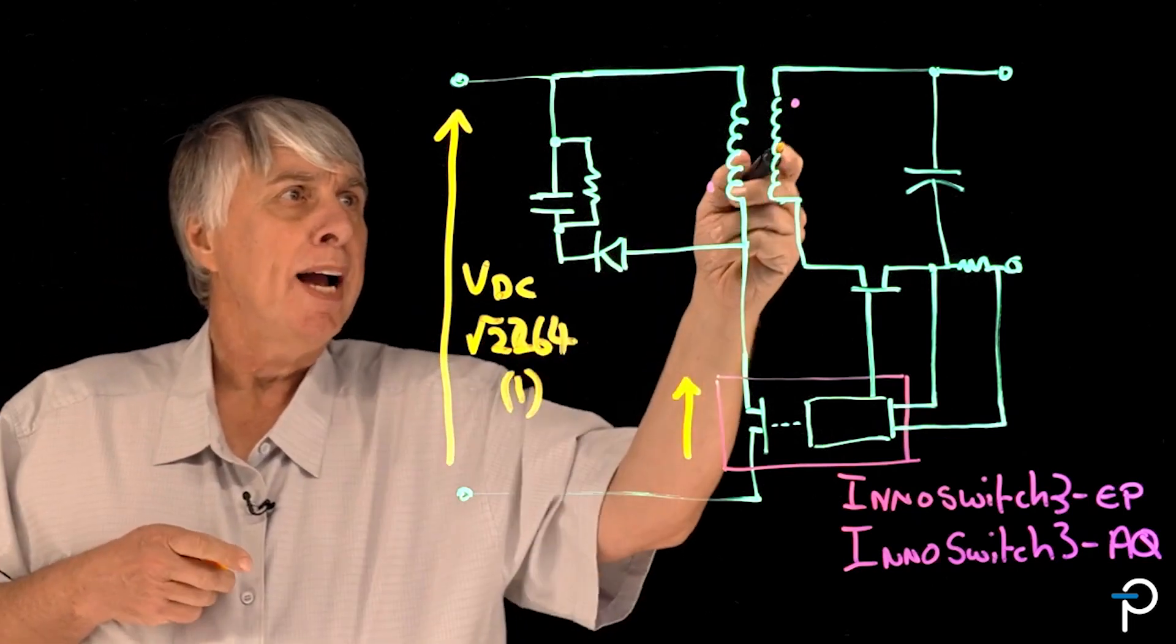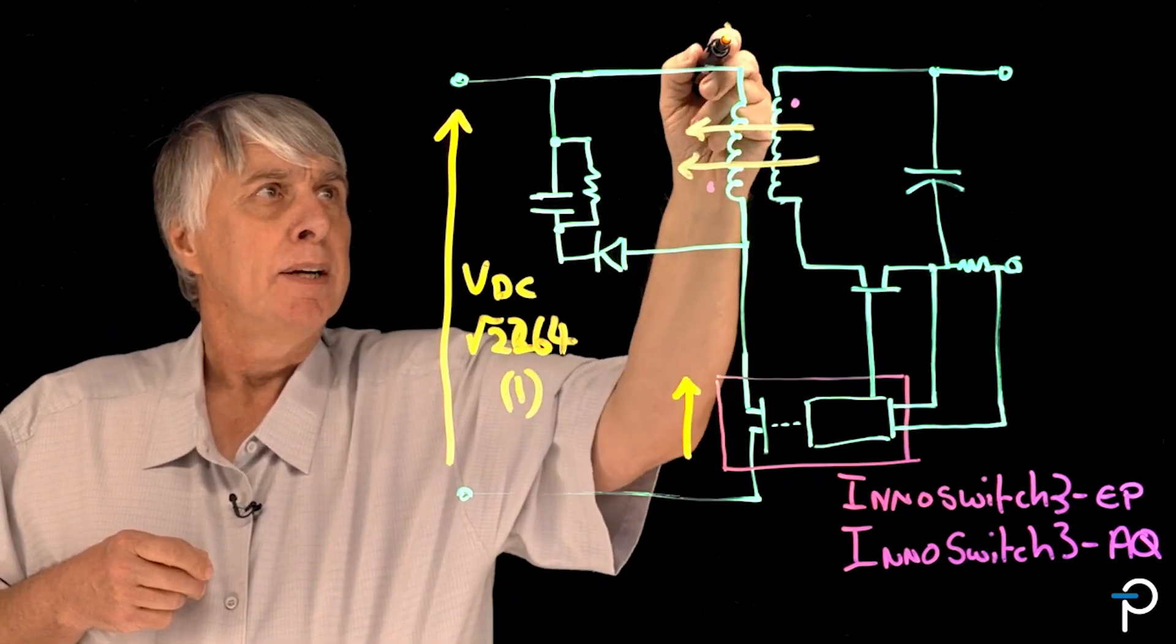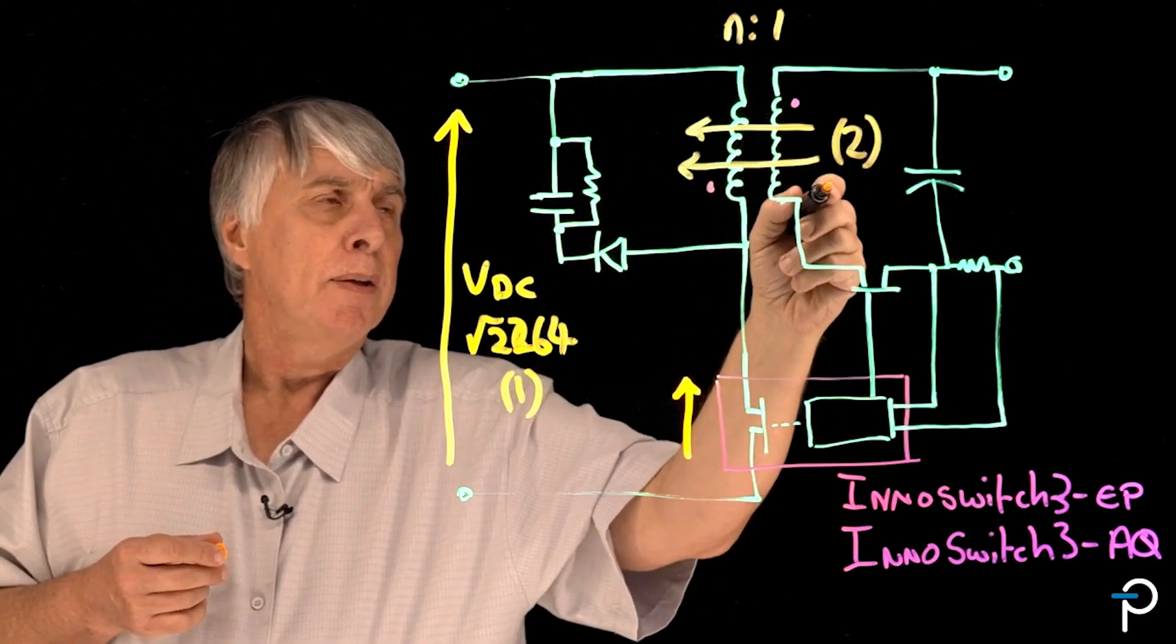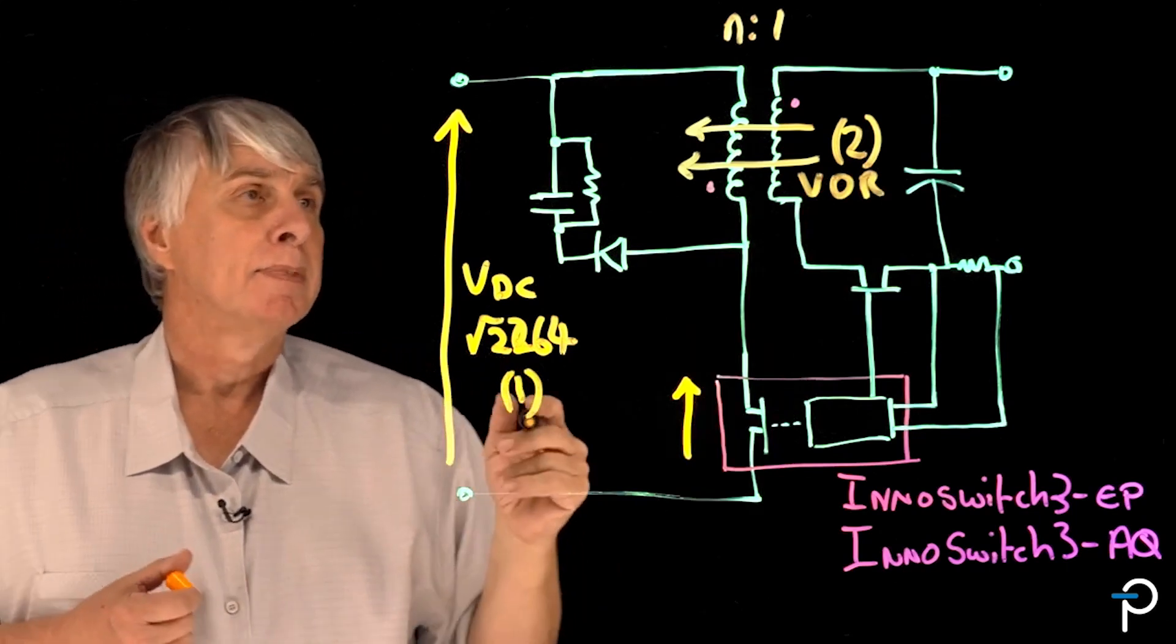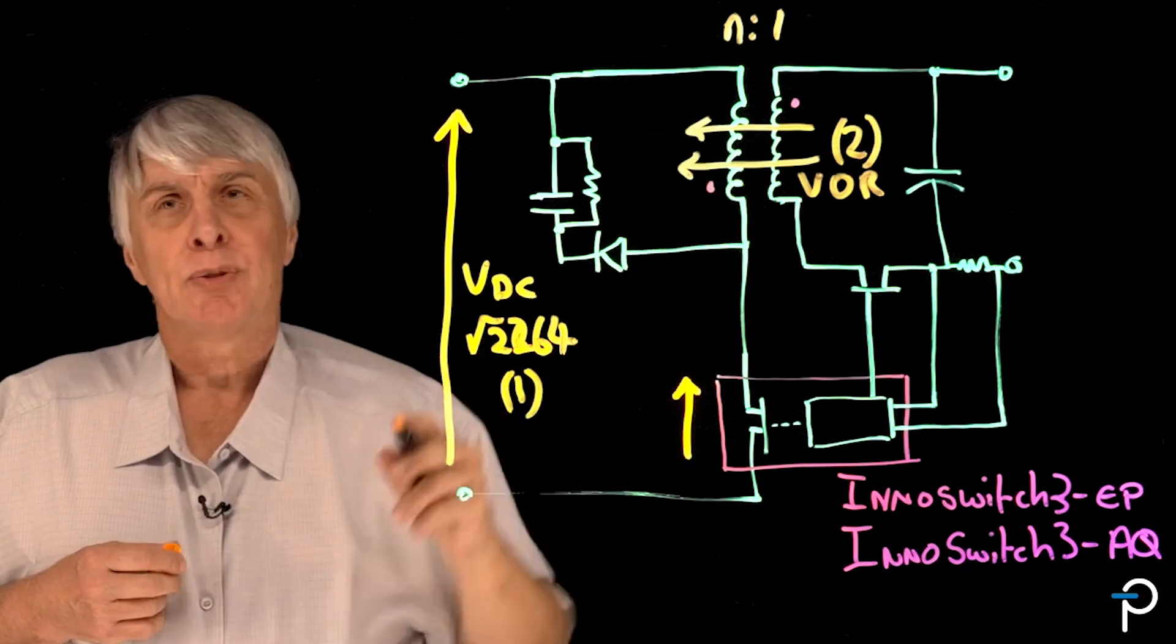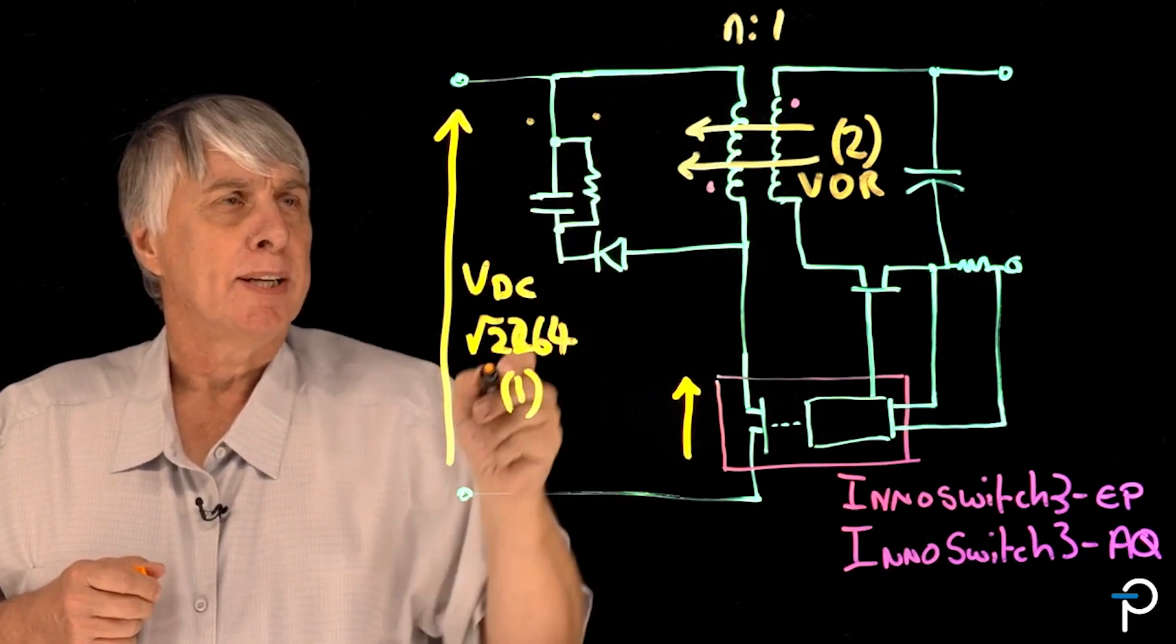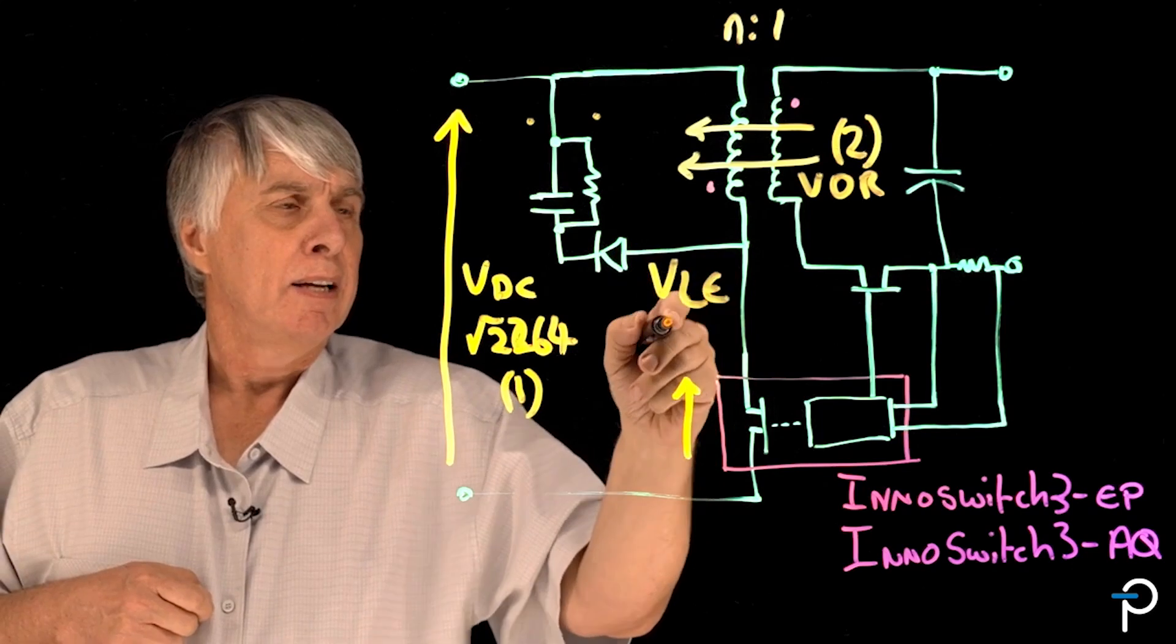In addition, we have the output voltage reflected back to the primary, and this is controlled by the turns ratio of the power transformer. We'll call that number two and the term for that is VOR, the voltage output reflected to the primary. The third one is the leakage energy in the power transformer. This is recycled to the primary side when the switch turns off and is controlled by the clamp circuit, and we'll call this VLE, and that'll be number three.